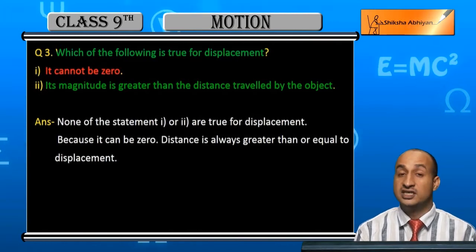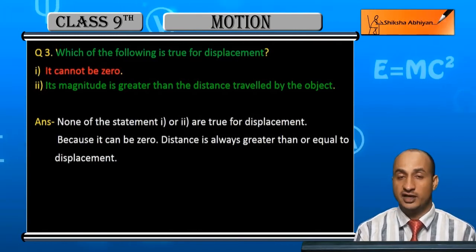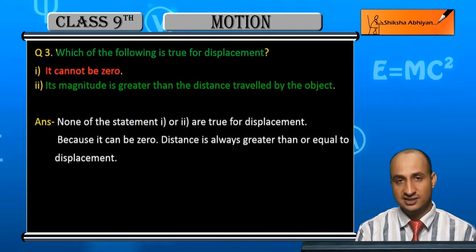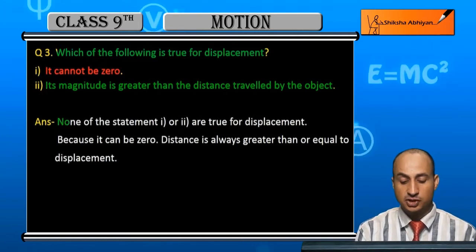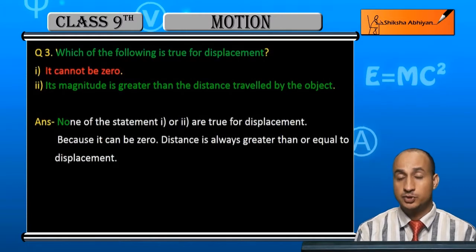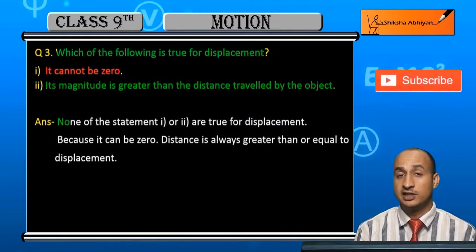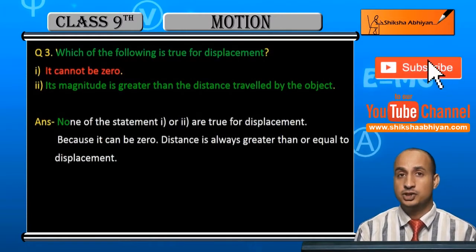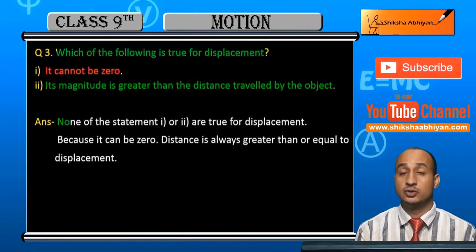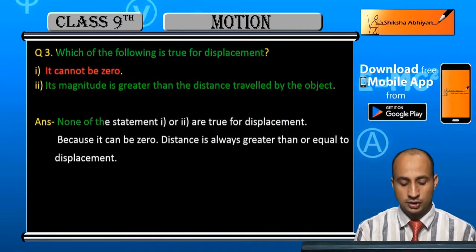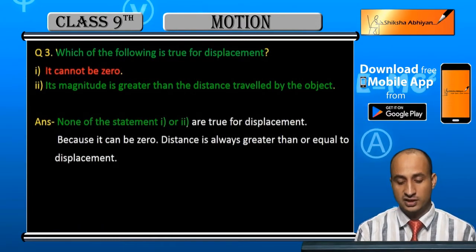The first option is wrong because displacement can be zero if its initial and final positions are the same. And the second option — its magnitude is greater than the distance traveled — is also wrong, because the magnitude of displacement is always less than or equal to the distance. So none of the statements is true — neither the first nor the second.